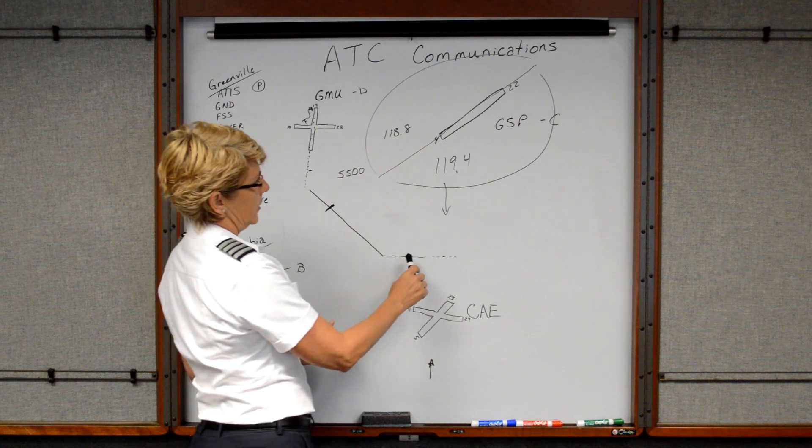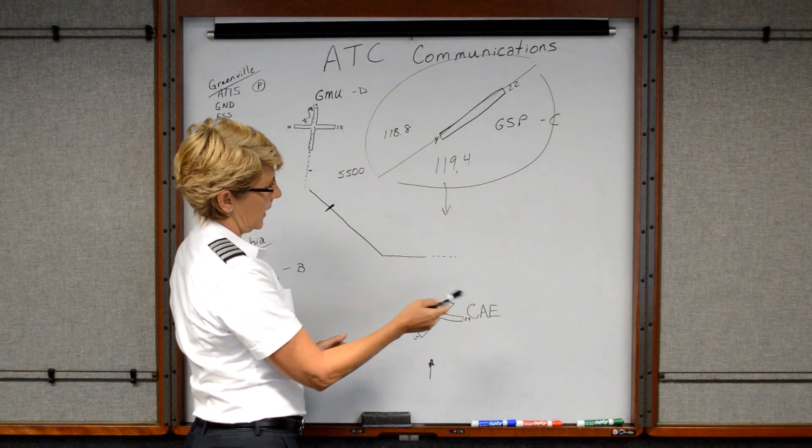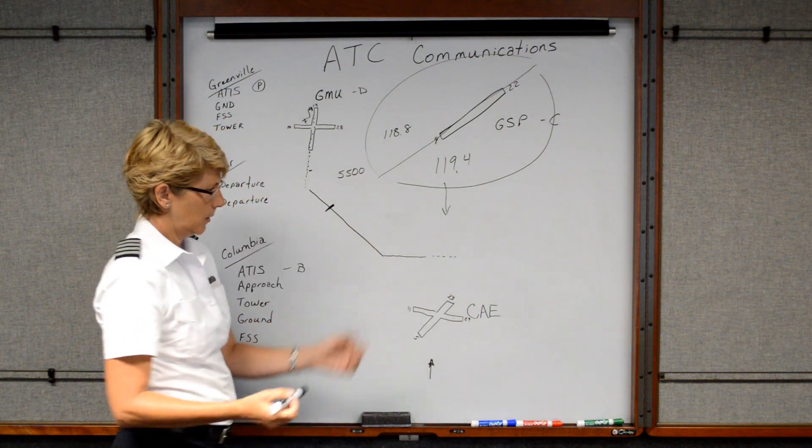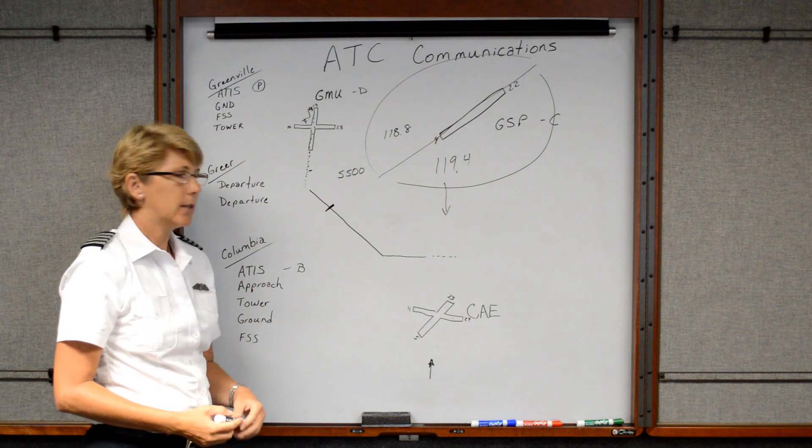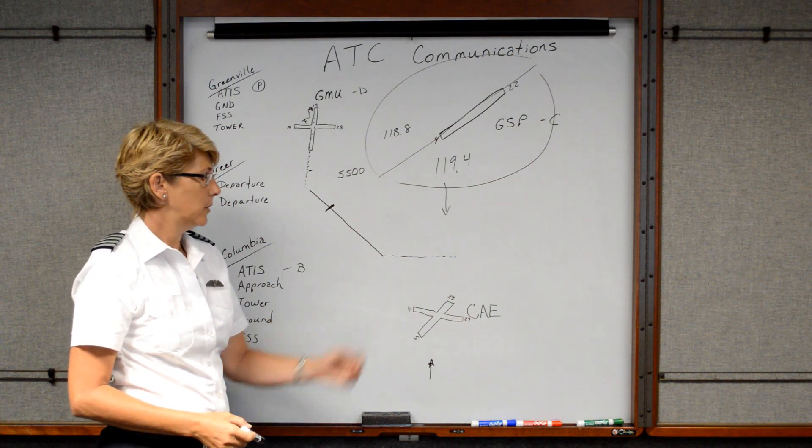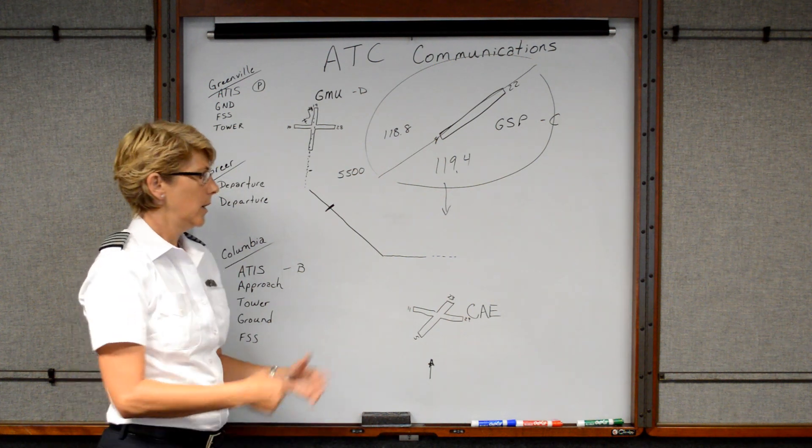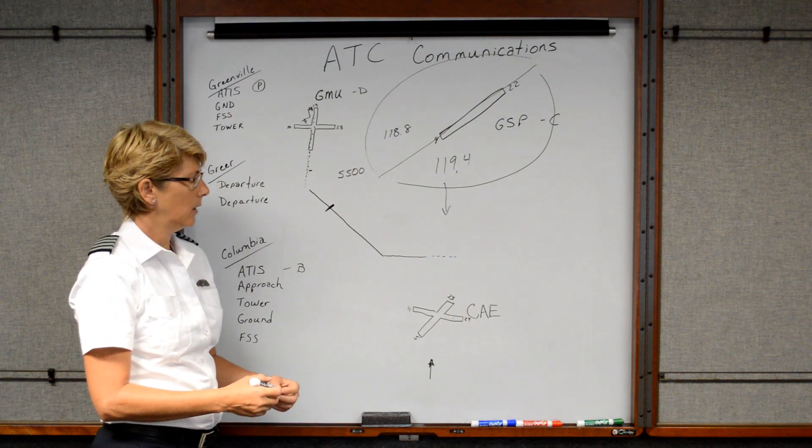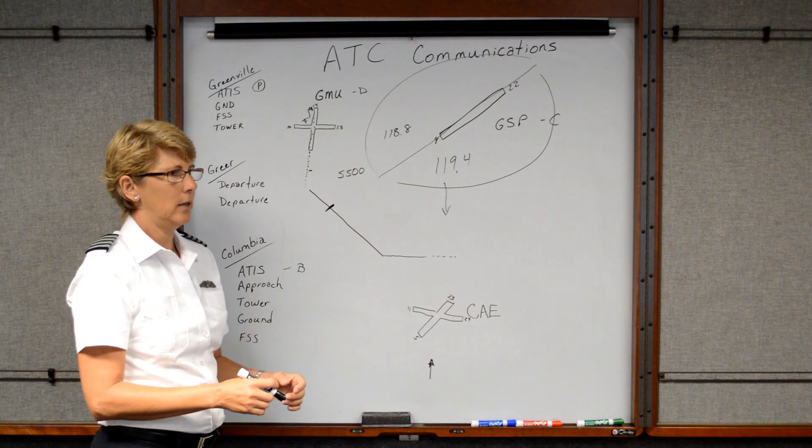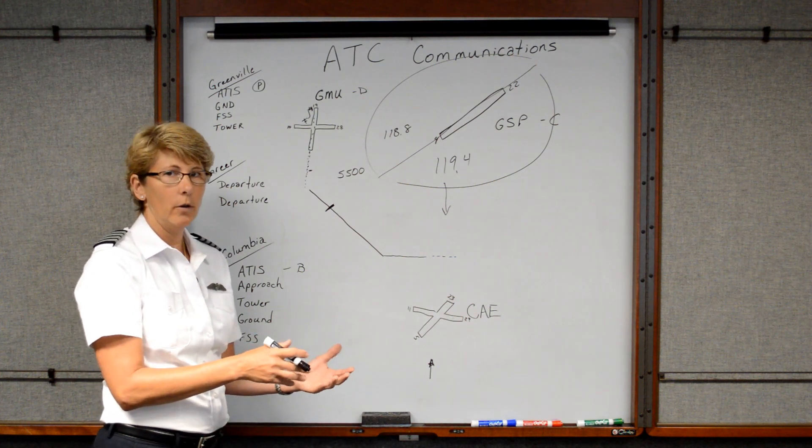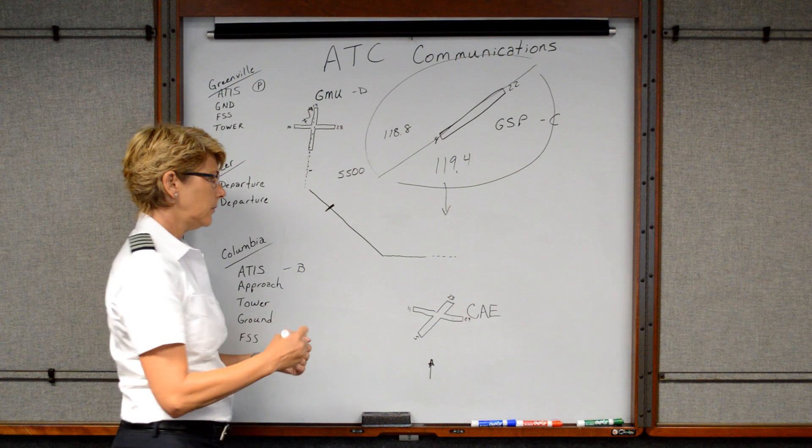And then Columbia approach is going to hand you off to Columbia tower. Tower controls the takeoff and landings. So once they, once the approach tells you to contact tower, then you would say something similar to Columbia tower, Skyhawk eight, seven, zero Sierra Papa be visual for runway two, three, or has runway two, three in sight, or whatever information that you want to give kind of pertaining to your location or what you're about to do.